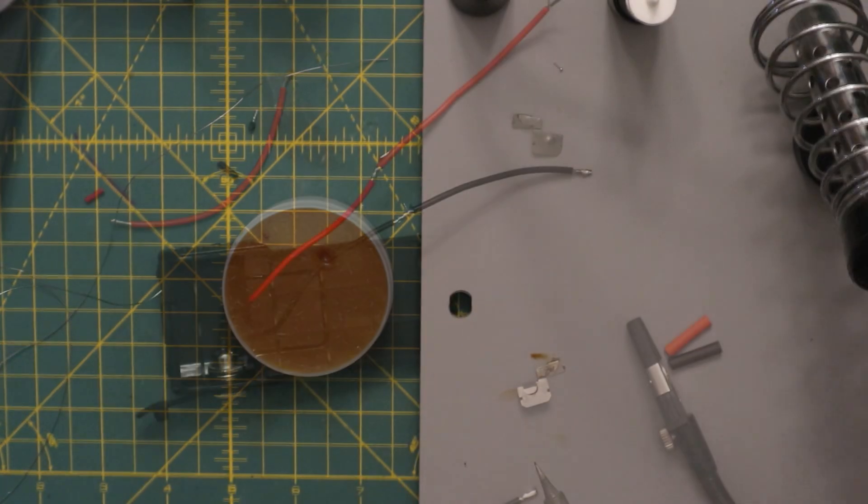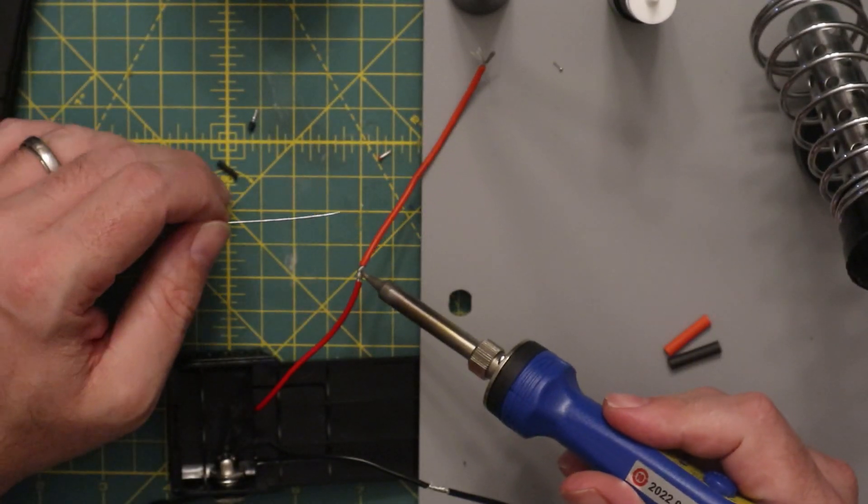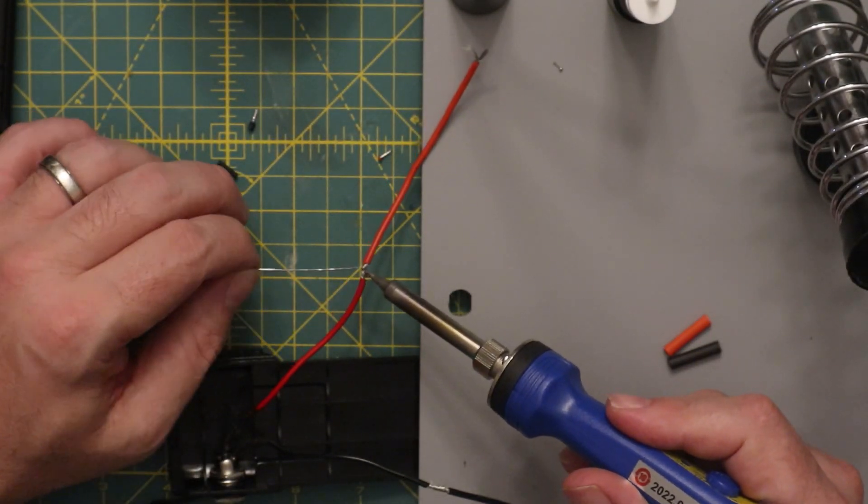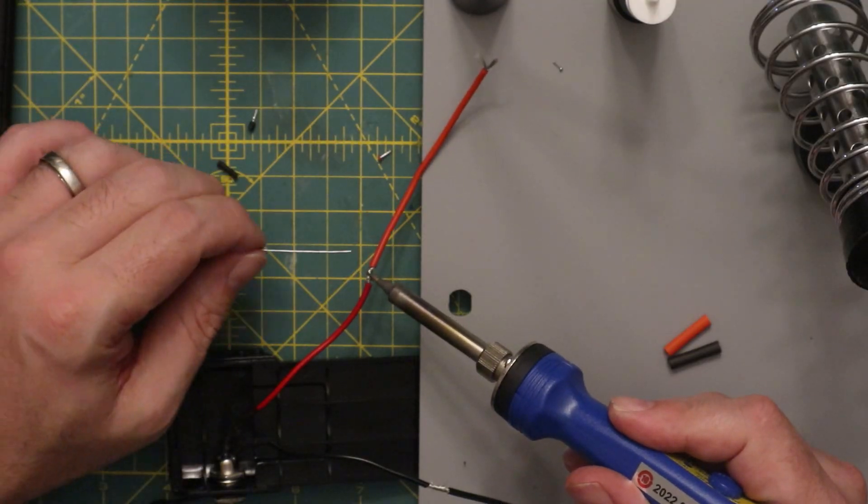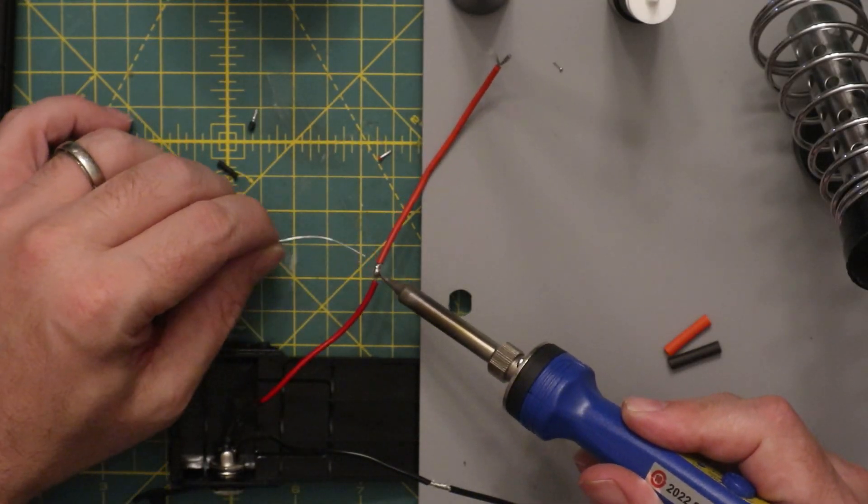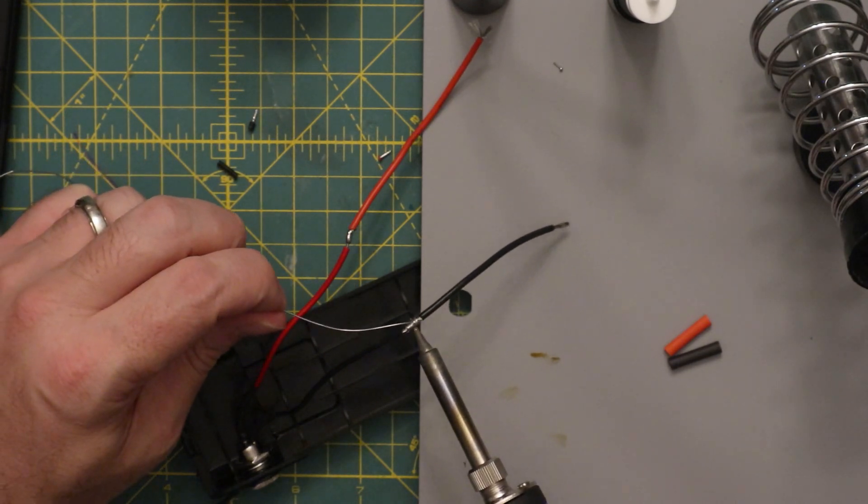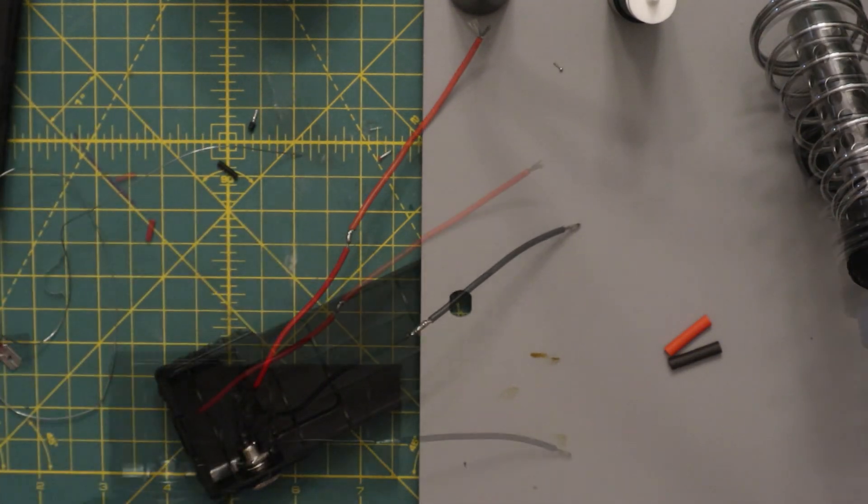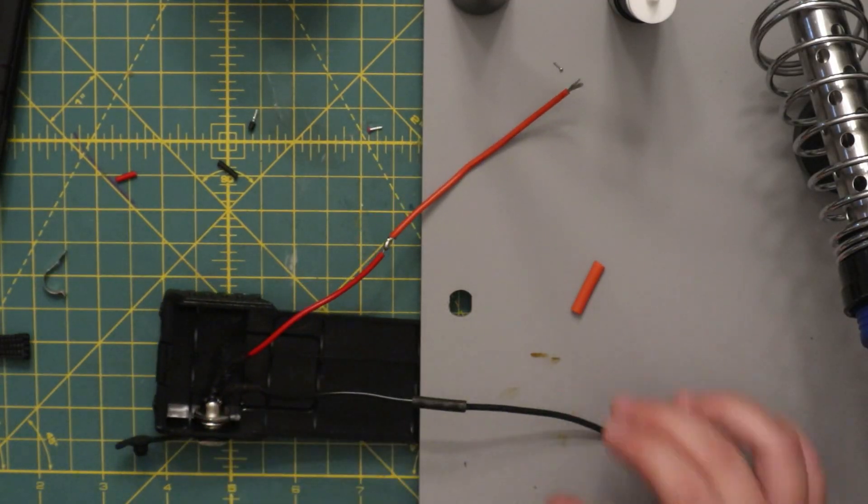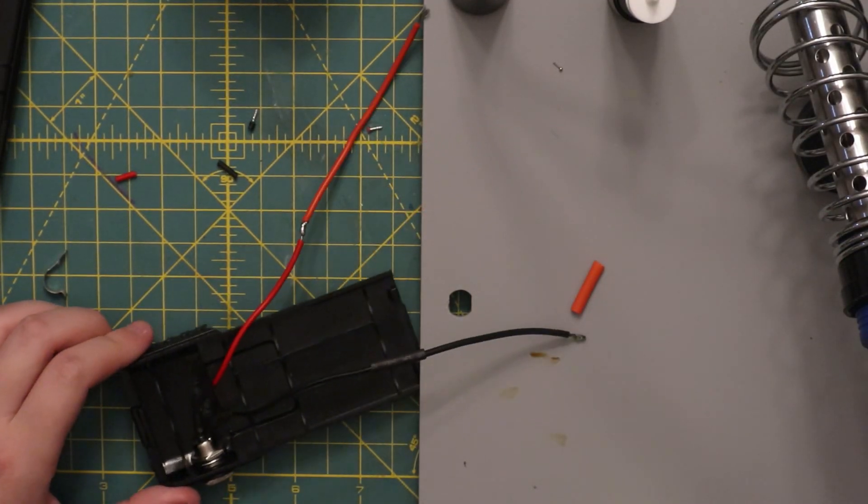Of course we don't discover this until after we've cut the leads, so we're going to solder the portions we have cut off back on and then add some heat shrink tubing back to it. And of course our laboratory assistant smelled the solder in the air and came out to help us apply that heat shrink tubing.